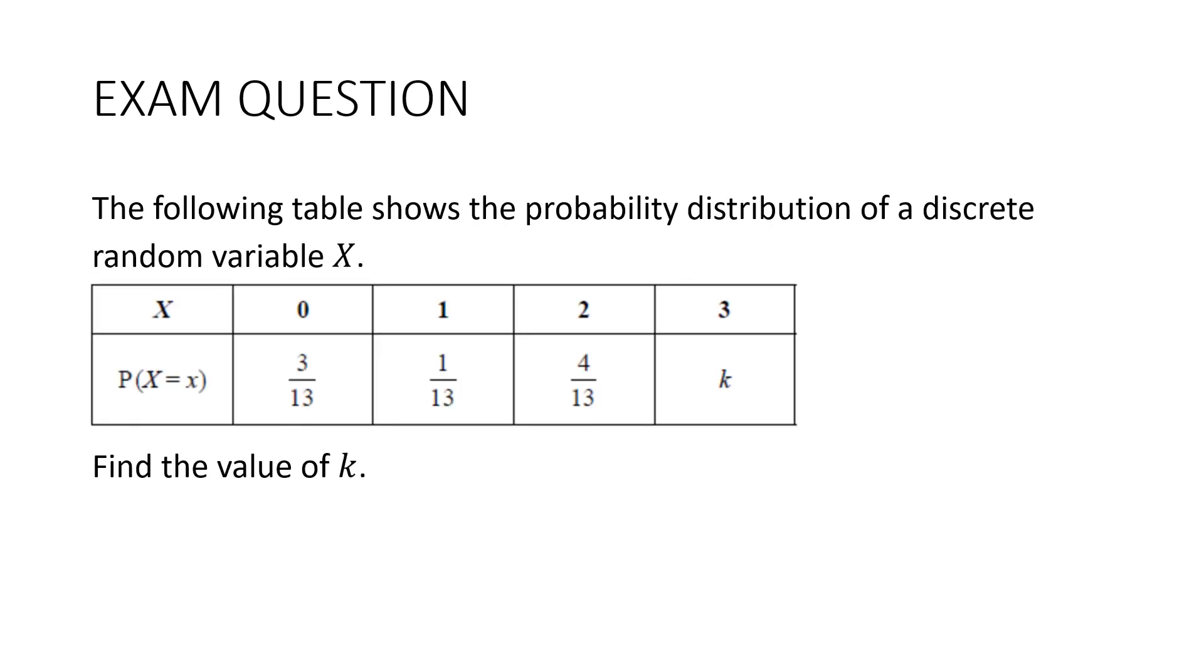If they want to make the question just slightly harder, they might do this. The following table shows the probability distribution of a discrete random variable X. We've got our values here, 0, 1, 2, 3, our various probabilities, but we don't know the probability that X is equal to 3. And it asks us to find the value of K. Well, we know that this has to all add up to 1, and so K is simply going to be 1 take away 3 13ths, take away 1 13th, take away 4 13ths, which is 5 13ths.